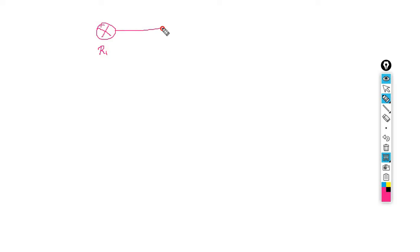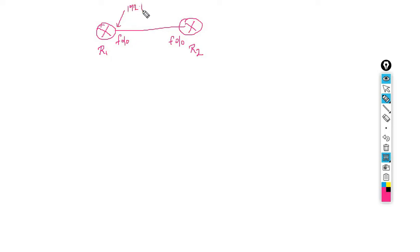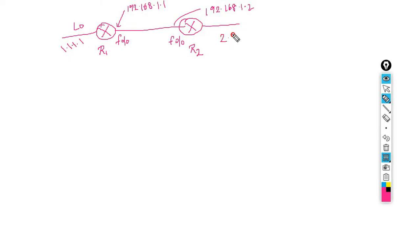Let me take my whiteboard. For example, I have one router here — this is R1, and this is R2. In between, this interface is FastEthernet 0/0 of R1, and this is FastEthernet 0/0 of R2. This interface will use the IP 192.168.1.1. I have one network here that is 1.1.1.1, and another network here that is 2.2.2.2.